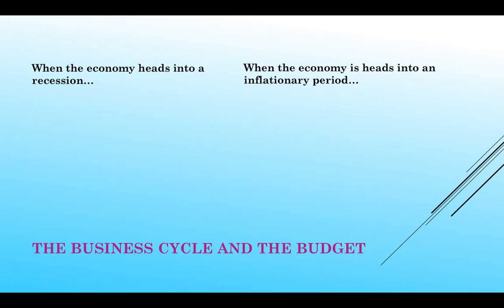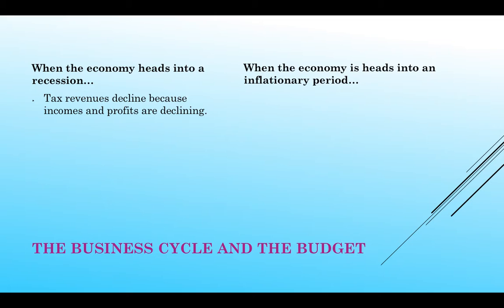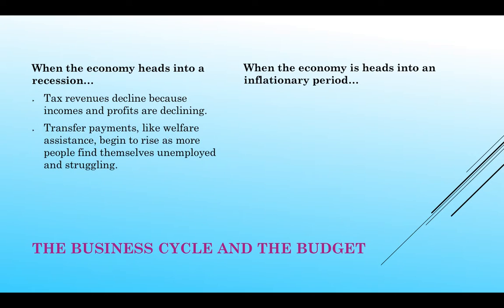When the economy heads into a recession, automatically tax revenues decline. People's incomes are going down, business profits are going down, people are out of work and so they're not paying as many taxes. Transfer payments like welfare and unemployment start to go up as people lose their jobs and struggle. These things happen automatically without any policy fixes from Congress.